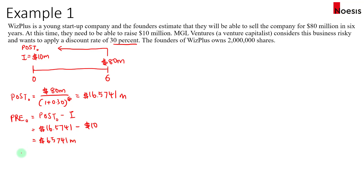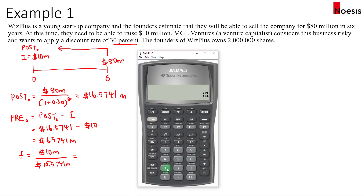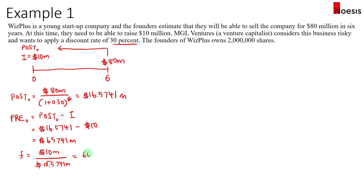Now if you're calculating the percentage ownership held by the VC: after putting in $10 million into the company Visplus, the company is now worth $16.5741 million after the first round of financing. In this case the VC will hold $10 million divided by $16.5741 million — so that's about 60.34%. The VC will hold 60.34% of the shares in the company and the founders will hold the remaining amount.